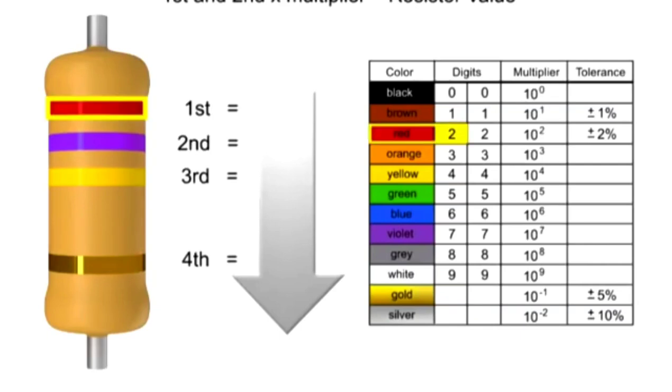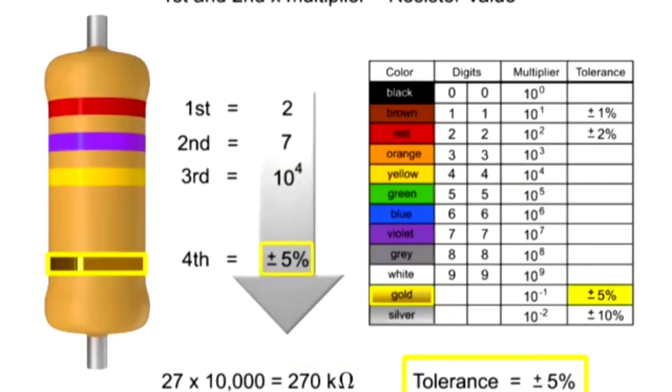The first band is red, so the first digit value is 2. The second band is violet, so digit 2 is 7. The third band is yellow, so we multiply the first two numbers by 10 to the fourth, or 10,000. Thus, the value of this resistor is 270 kilo-ohms with a tolerance of plus or minus 5%.